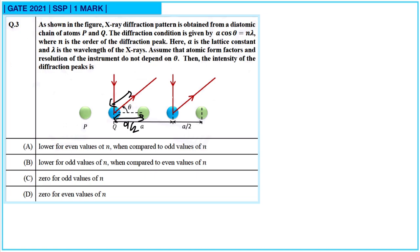Assume that atomic form factors and resolution of the instrument do not depend on θ. The intensity of the diffraction peak is to be determined. If this full spacing is A, then this portion will be A/2, and the path difference for the second atom is A/2 × cos θ.